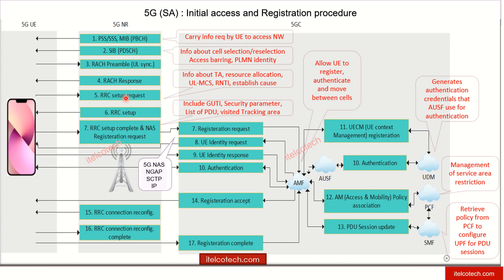After that, there is a Layer 3 setup which will happen — an RRC setup request that will come from the UE. Once the setup request comes up, it will carry information related to the tracking area and how resources will be allocated to the user. It also carries the cause of establishment and the uplink CQI, based on which the channel coding scheme will be allocated to the user. Once the request is received, there is an RRC setup response back in the downlink from the base station to the UE. Once the RRC is set up, the next step is communication towards the core network, which we'll see in the next slide.